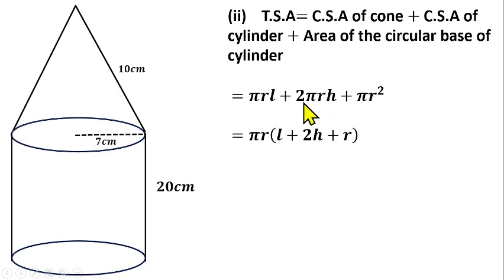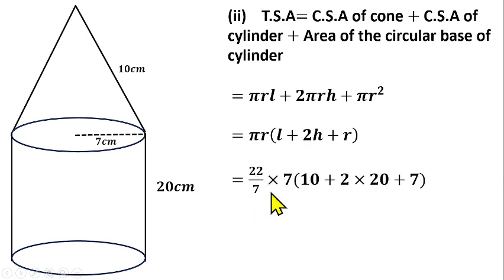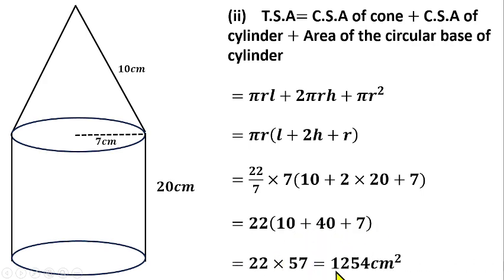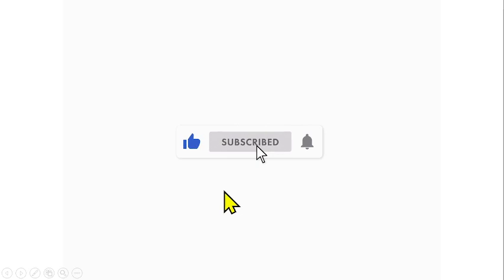Substituting the values: π = 22/7, r = 7, slant height l = 10, cylinder height H = 20. So (22/7) × 7 × (10 + 2×20 + 7) = 22 × (10 + 40 + 7) = 22 × 57 = 1254 cm². That is the total surface area of this solid shape. Please don't forget to subscribe to this channel — may the good Lord bless you, thank you, and I'll see you in the next video.